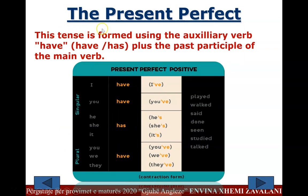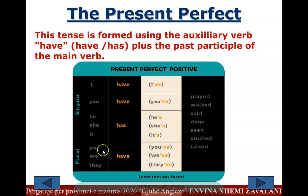Let's focus on the verb forms in the present perfect tense. This tense is formed using the auxiliary verb have/has plus the past participle of the main verb. Conjugation: I have played, you have walked, he/she/it has done, you/we/they have studied or talked.